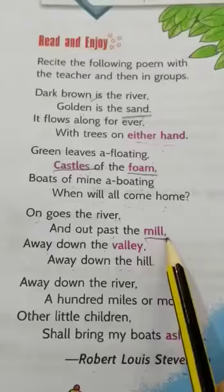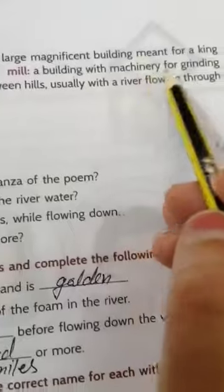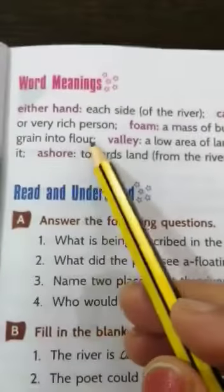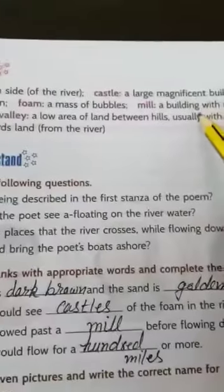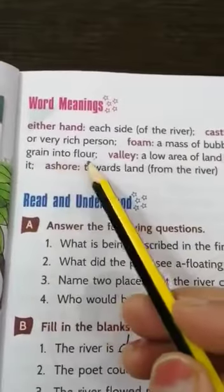What is a mill? A mill is a building with machinery for grinding grain into flour — a place where machines are used to grind grains and make flour. That means a chakki — a grinding mill.